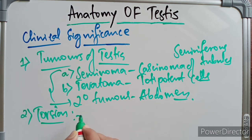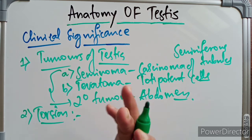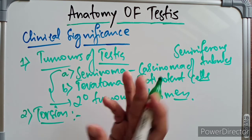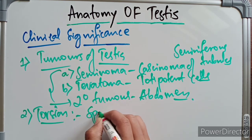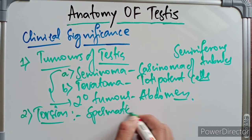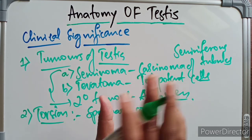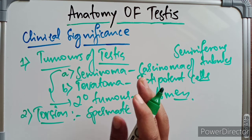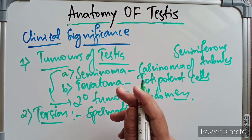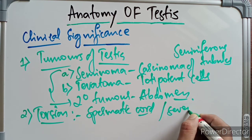Torsion of the testes is a clinical condition in which rotation of the testis occurs around the spermatic cord. It commonly affects active young people and children, and is accompanied by severe pain.